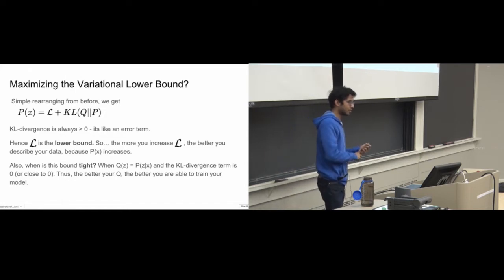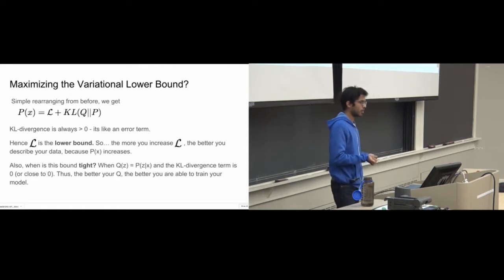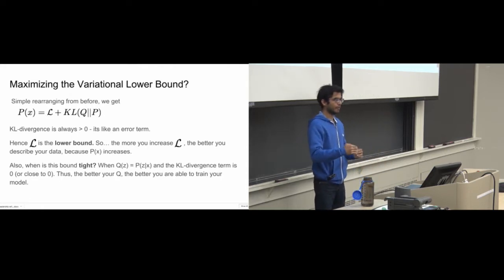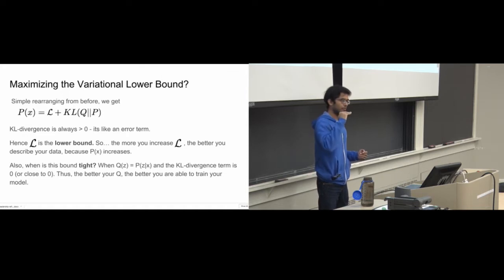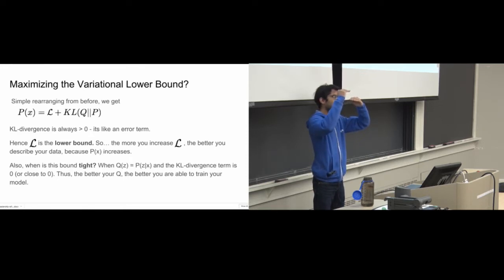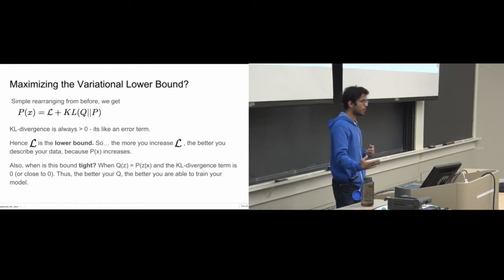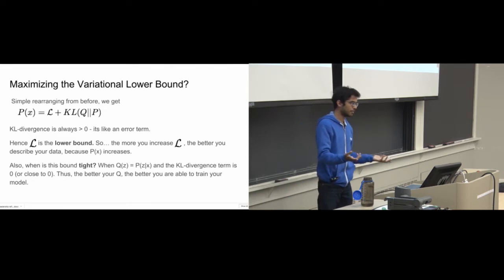As we increase the variational lower bound L, we are bound to increase the log likelihood of the data — meaning we learn to better represent and draw samples from our data. When is this bound tight? When q(z) is almost similar to p(z|x), our proposed distribution closely matches the actual posterior. If KL divergence is zero, p(x) and the variational lower bound are almost identical. The more we raise L, the faster we can increase the log likelihood, so tighter bounds mean better training. This is a whole area of research: how to make variational lower bounds tight.